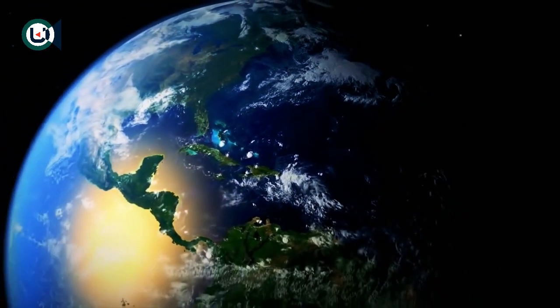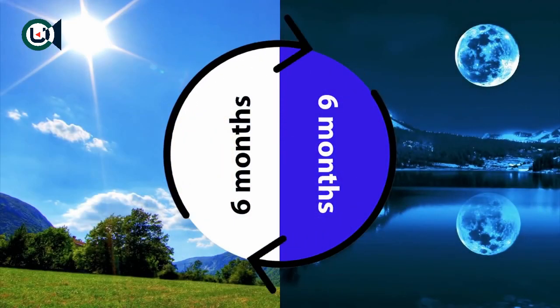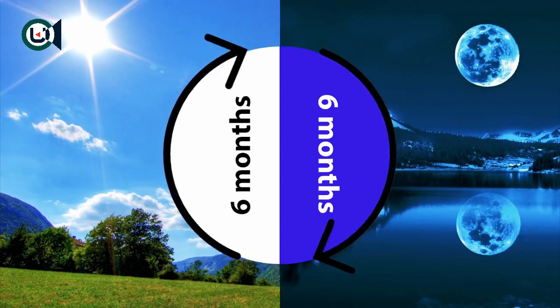There are two different scenarios. If the Earth just stopped spinning, but wasn't tidally locked to the Sun, the planet would experience six months of sunlight and six months of darkness.